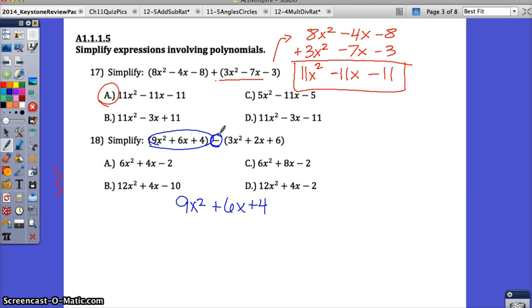I like to distribute it so that I can just add. So it's going to be minus 3x², and then I can just add those two together. It's going to be minus 2x, and it's going to be minus 6. By distributing that minus sign in the beginning, now I can just add each column together. So 9x² and negative 3x² gives me a positive 6x². Positive 6x, take away 2x, gives me a positive 4x. Positive 4, take away 6, gives me a minus 2. I have more negatives here.